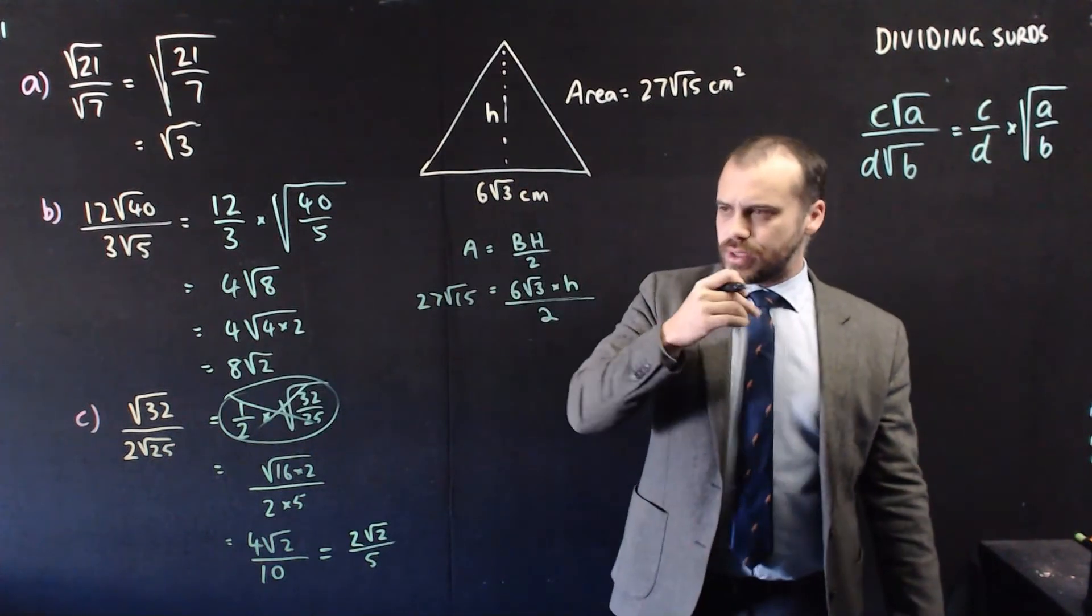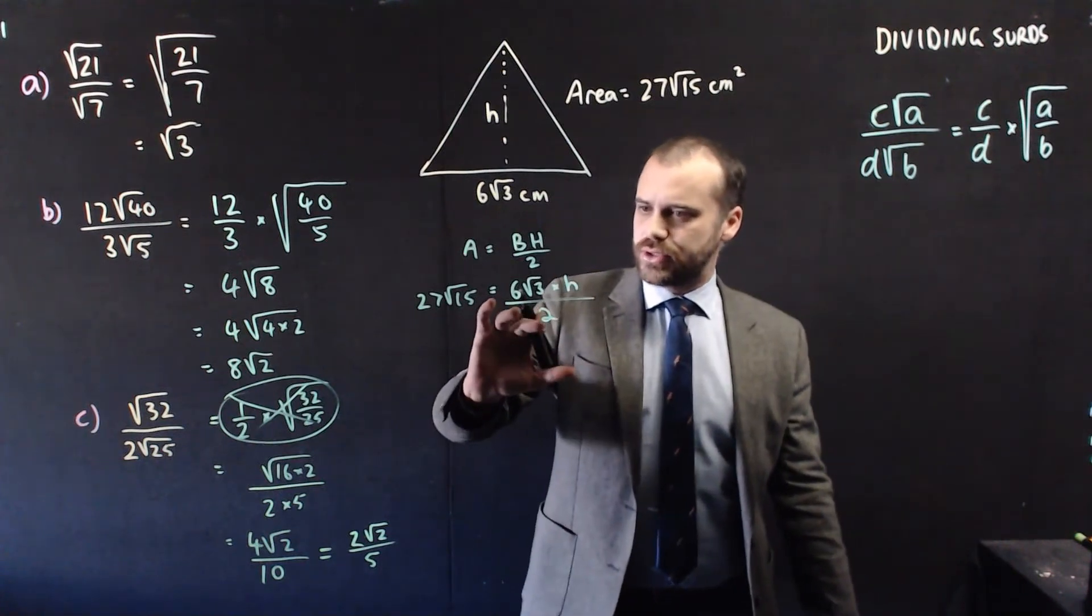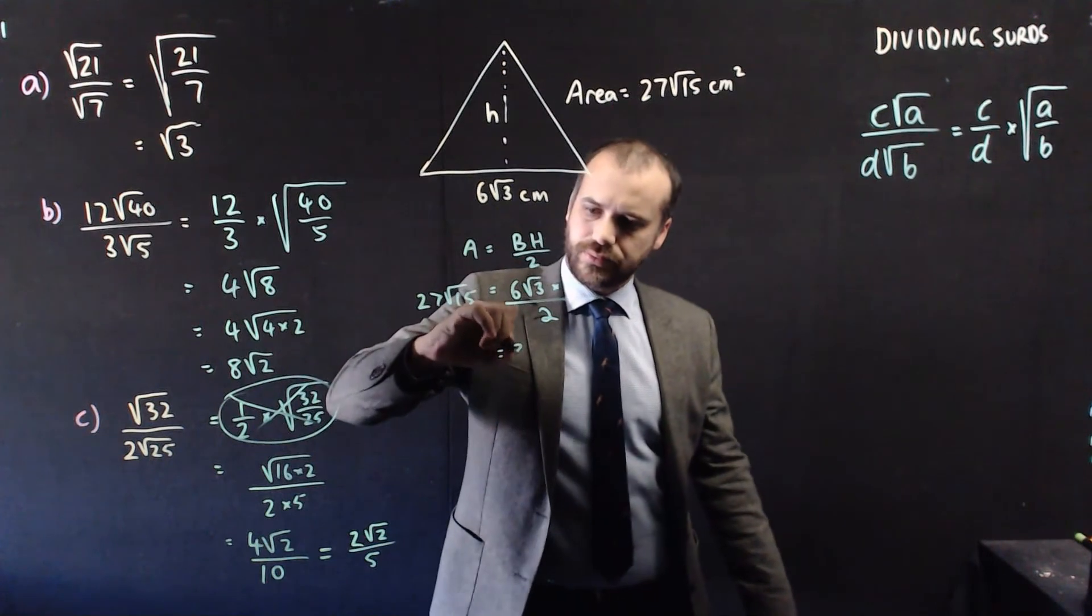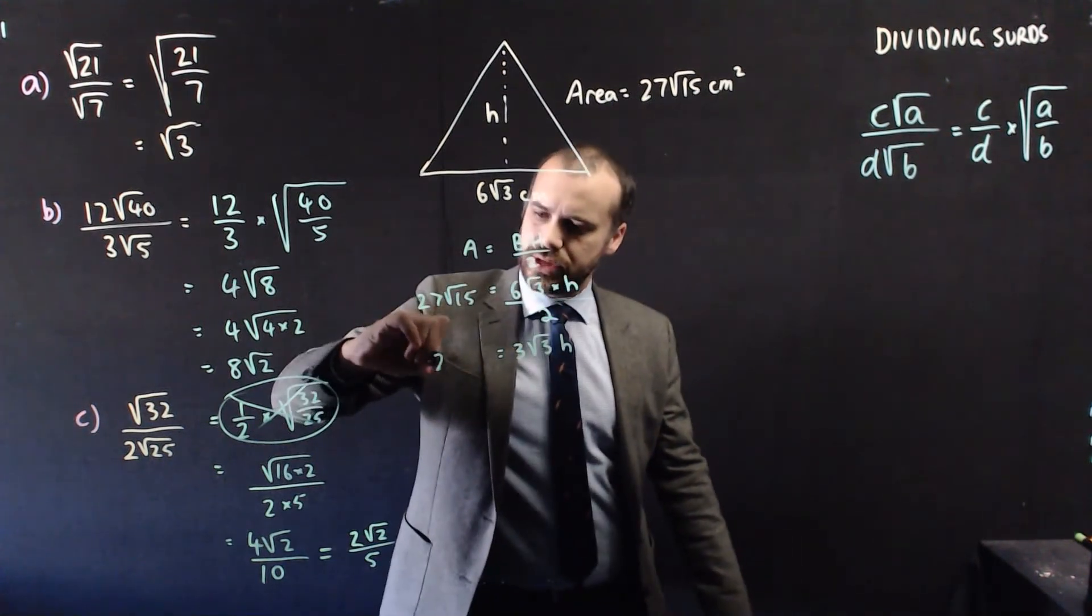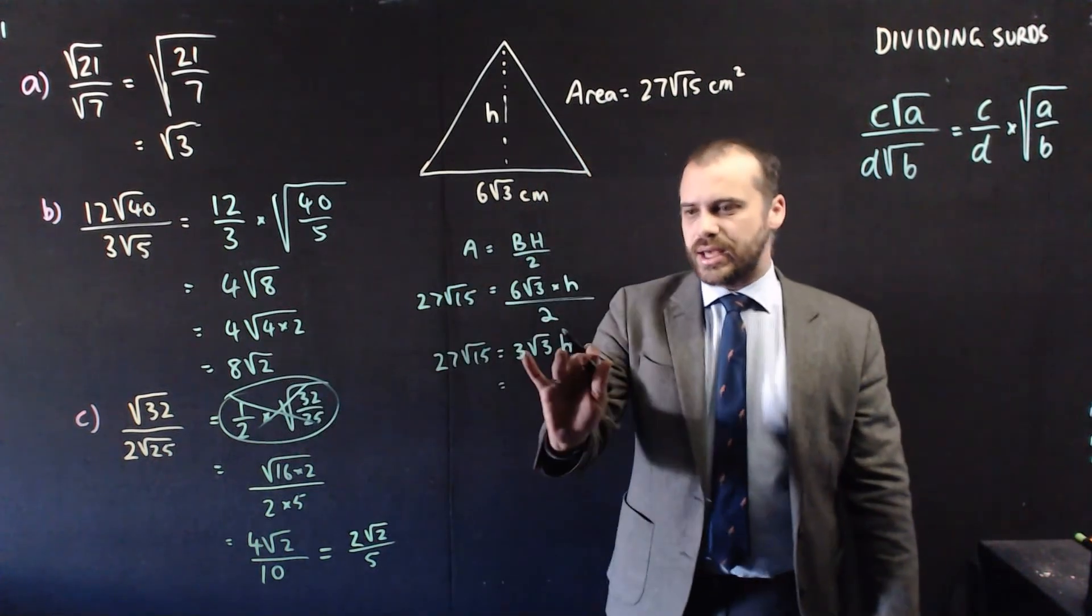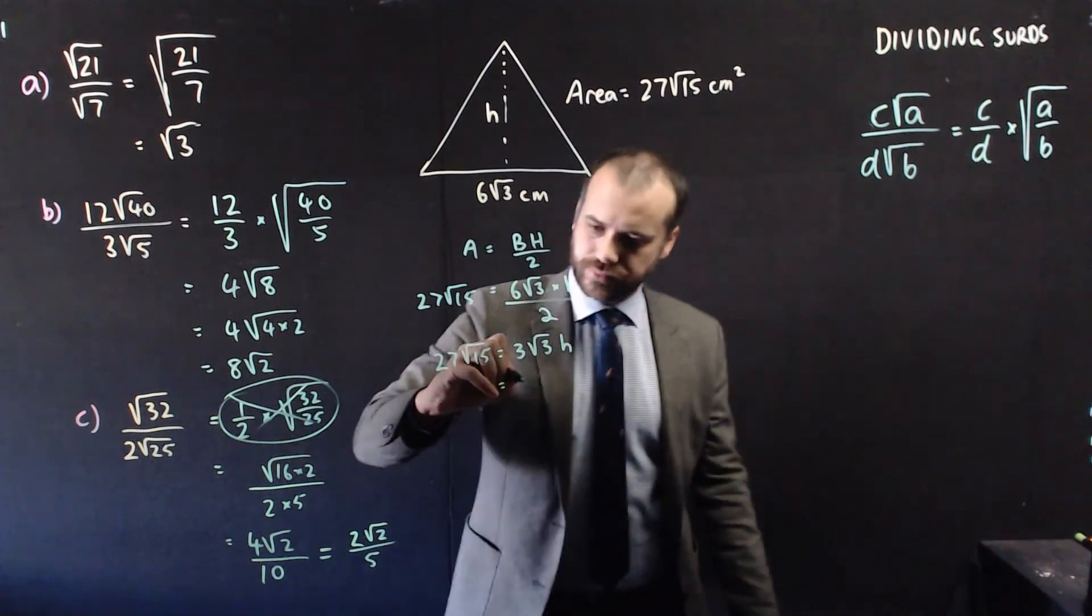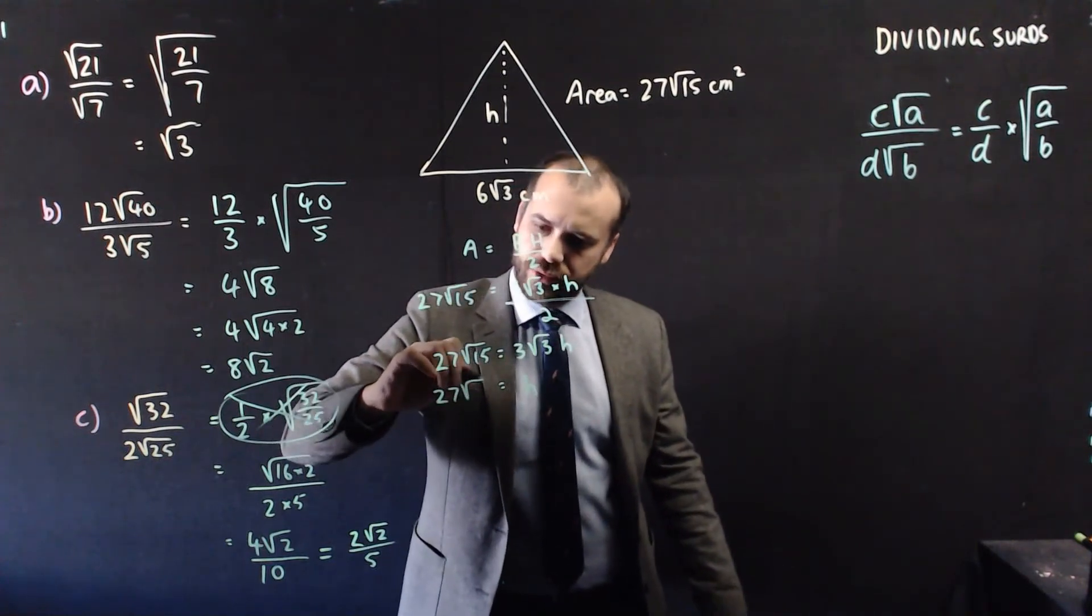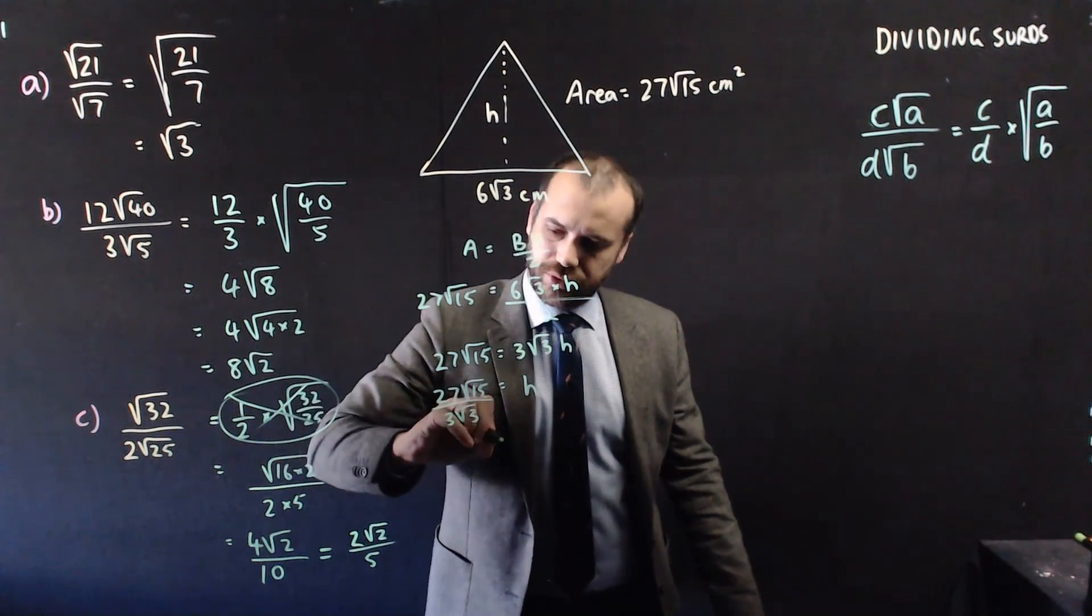Now we can do two things here. The first thing we can do is just divide by 2, so that's going to be 3 root 3h, and this is going to be 27 root 15. And now to get h by itself, we need to divide by 3 root 3. So, h is going to be equal to 27 root 15 over 3 root 3.